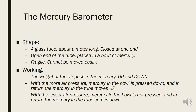Let us now see the working of the mercury barometer. A mercury barometer consists of a glass tube about a meter long, closed at one end and filled with mercury, and a bowl of mercury. A mercury barometer is a fragile instrument; it cannot be moved easily. The open end of the glass tube is placed in the mercury bowl.